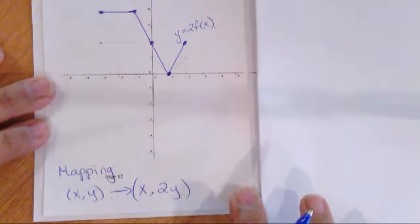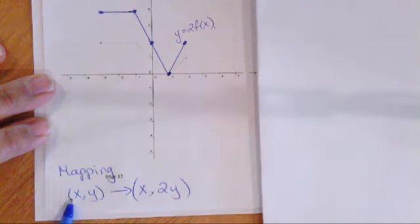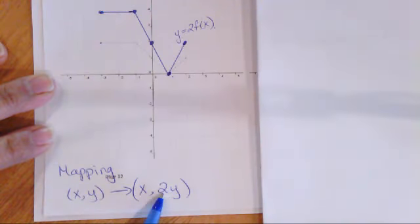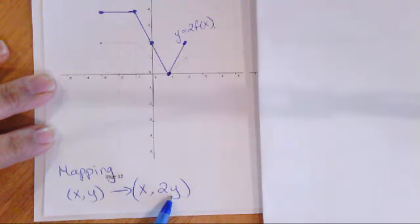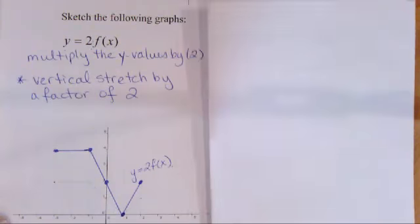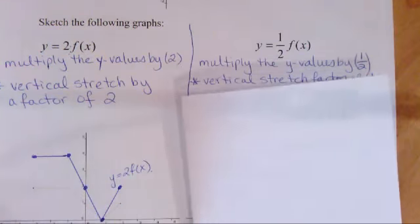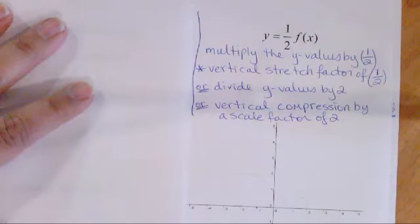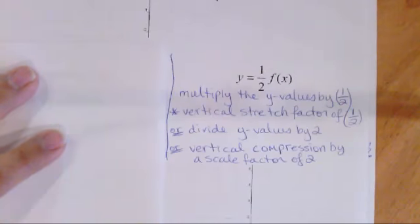Looking at mapping notation for this, there are no changes applied to x — only changes applied to the values of y, and they're multiplied by two. That's what the mapping notation looks like. Now let's have a look at the other example: y equals one half f of x.